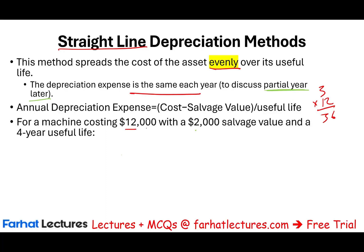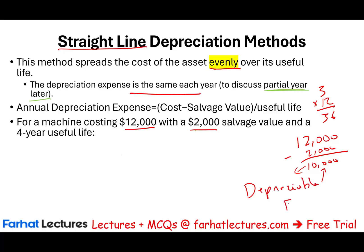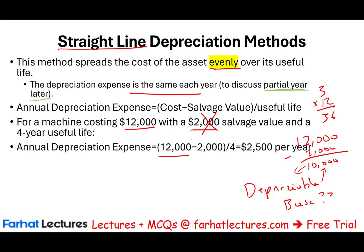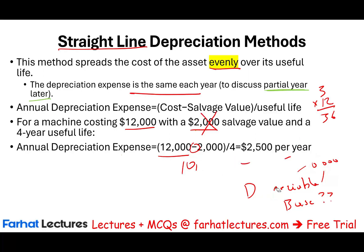For our example, our asset has a cost of $12,000 and a salvage value of $2,000. Taking $12,000 minus $2,000 gives us $10,000 — this is called the depreciable base. The depreciable base is the maximum amount you can take in depreciation for this asset, because you cannot depreciate the $2,000 salvage value. So using the straight-line formula: $12,000 minus $2,000 equals $10,000, divided by 4 years — every year we are going to take $2,500 in depreciation for this asset.